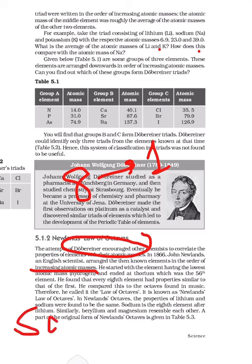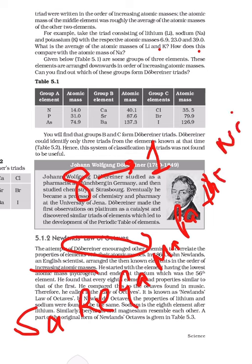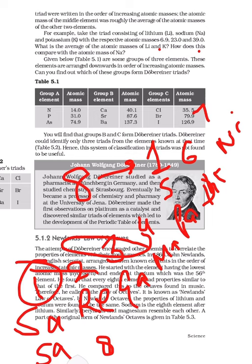In music we use sa re ga ma pa dha ni sa. The sa gets repeated - one, two, three, four, five, six, seven, and eight. You can see in sa re ga ma pa dha ni sa, the sa repeats. The relation is between one and eight.